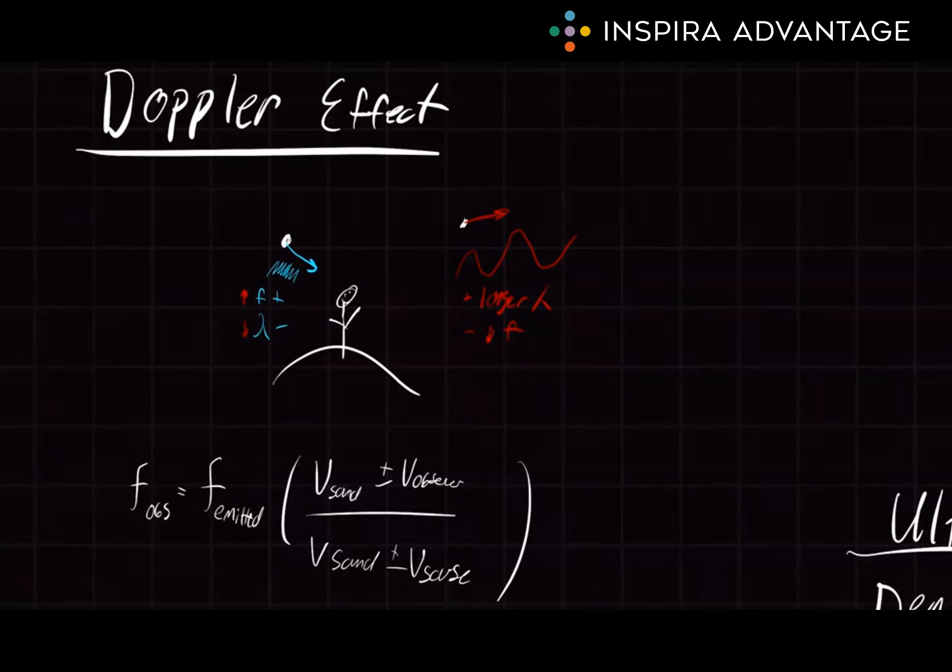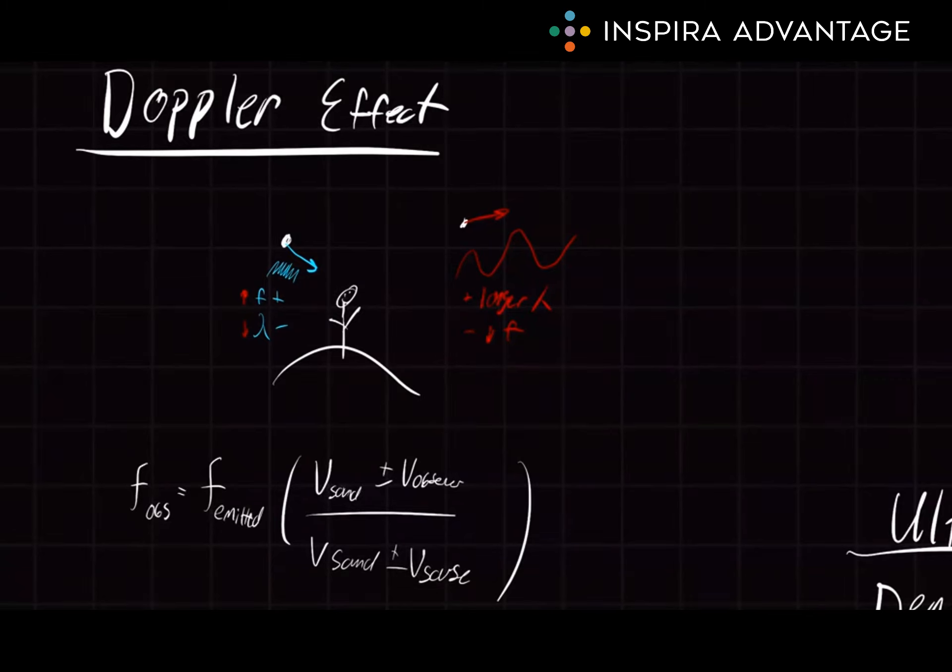Mathematically, this is expressed using the formula: frequency observed equals the frequency emitted times the velocity of the thing emitting the sound plus or minus the velocity of the observer, divided by the velocity of the sound plus or minus the velocity of the source. Another way that this is tested - and I know this isn't sound, but I think it's a very nice visual way to think about it - let's say we've got somebody standing on earth, and there's this blue star over here.